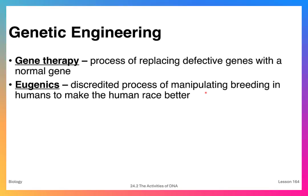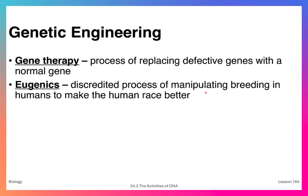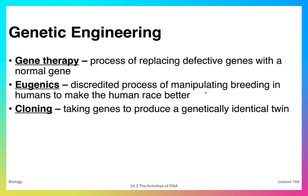Eugenics is a term that came into being in the early 1900s. It is a discredited process for manipulating the breeding of humans in order to make the human race better, not unlike the idea of breeding cows or horses. It is considered ethically inappropriate to manipulate human reproduction in this way. Cloning is a process where you take the genes of one animal or plant and produce a genetically identical twin. There has never been human cloning; a famous example is a sheep named Dolly. Cloning plants has been done for a long time and is fairly easy to do.